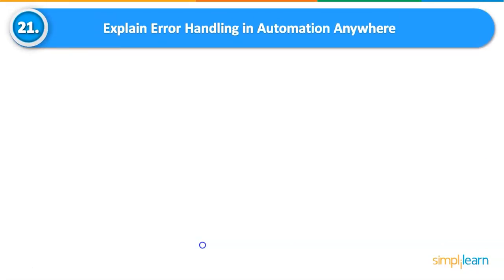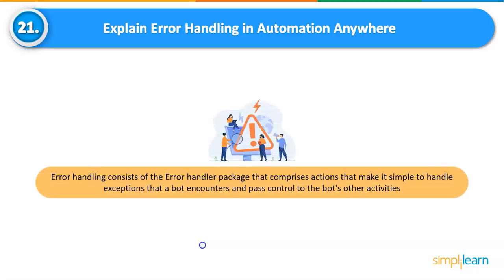Explain Error Handling in Automation Anywhere. Error handling consists of the error handler package that comprises actions which make it simple to handle exceptions a bot encounters and pass control to other activities. You can use error handler actions to separate actions that cannot complete a task or to handle an exception. When a bot meets an error, handling exceptions ensures that the work is completed.